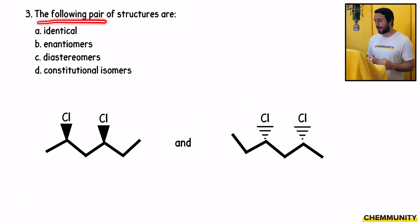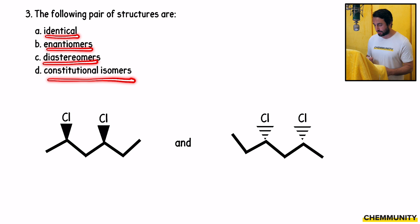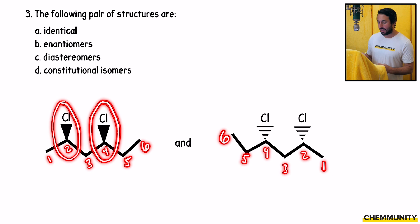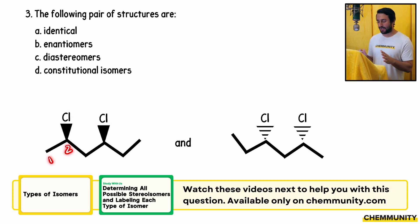Three asks, the following pair of structures are - are they identical, enantiomers, diastereomers, or constitutional isomers? So what do we have here? We definitely have one, two, three, four, five, six. It's a six carbon molecule. Both of them are six carbon molecules. We have two chloro groups, and we want to try to understand the relationship here. Over here, it looks like it's the second and fourth carbon from the left.